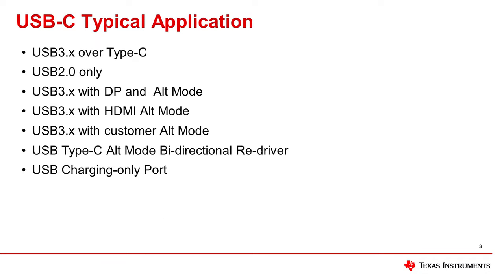Some typical USB Type-C applications are USB 3 over Type-C, USB 2 only, USB 3 with DP alt mode, USB 3 with HDMI alt mode, USB 3 with customer alt mode, USB Type-C alt mode bi-directional redriver, and USB charging-only port.